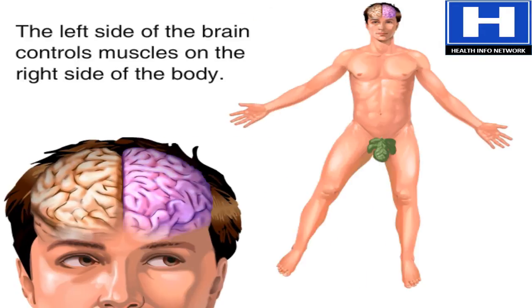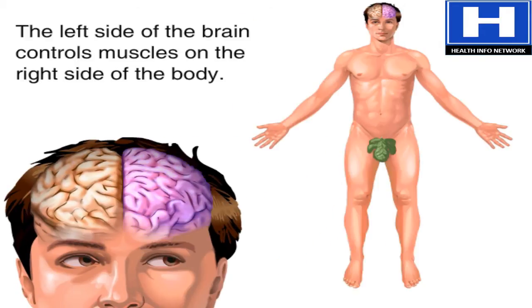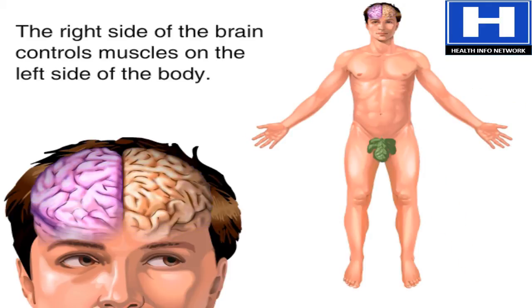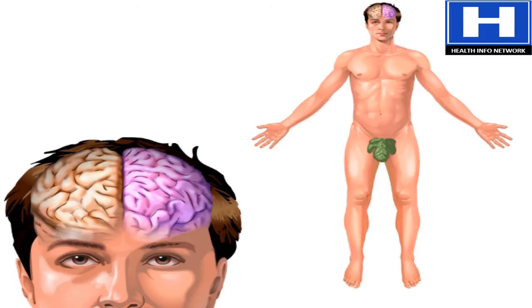Here, the left side of the brain is highlighted to show the control over right arm and leg movement, and the right side of the brain is highlighted to show the control over left arm and leg movement. The left side of the brain controls the muscles on the right side of the body, and vice versa.